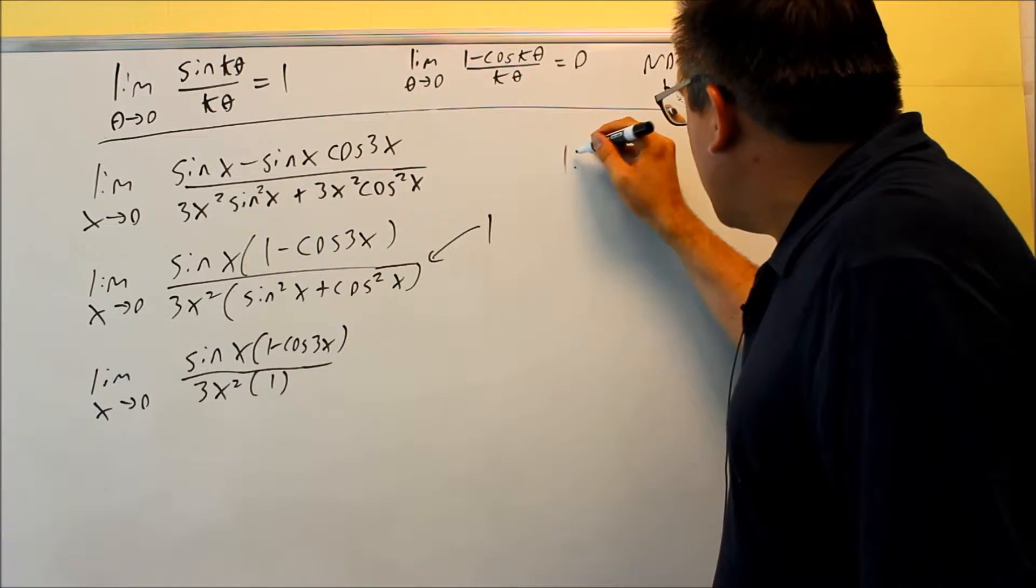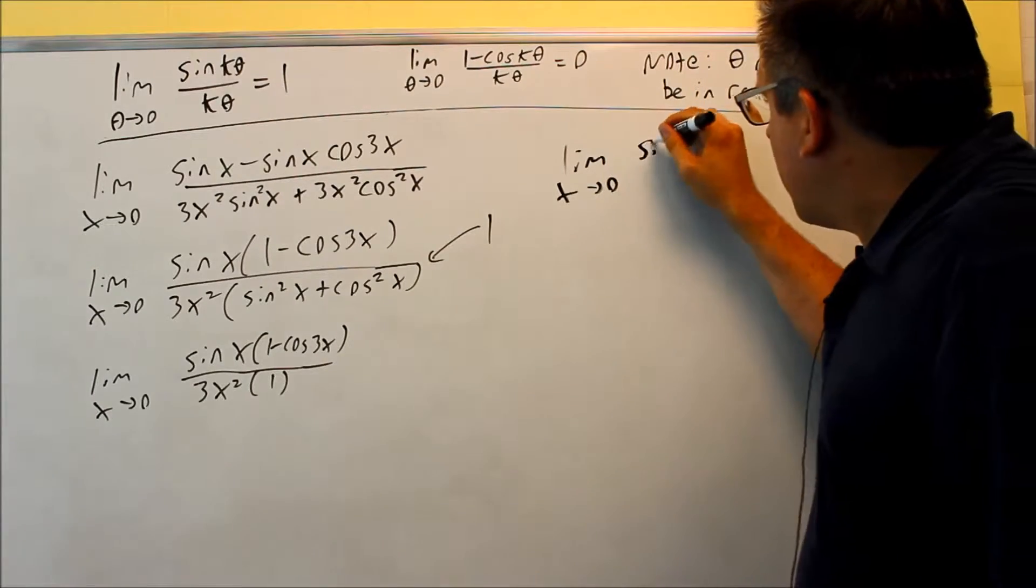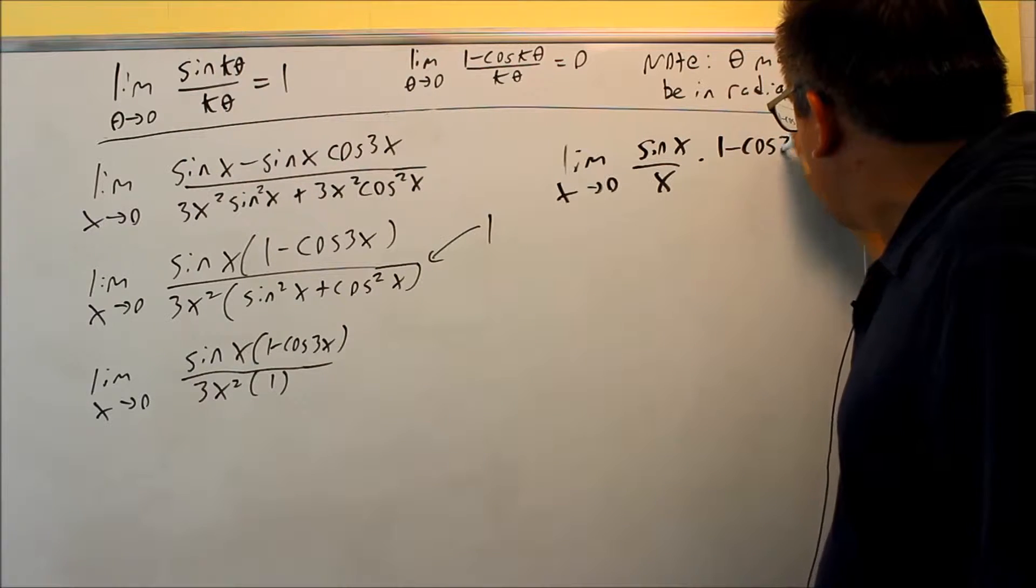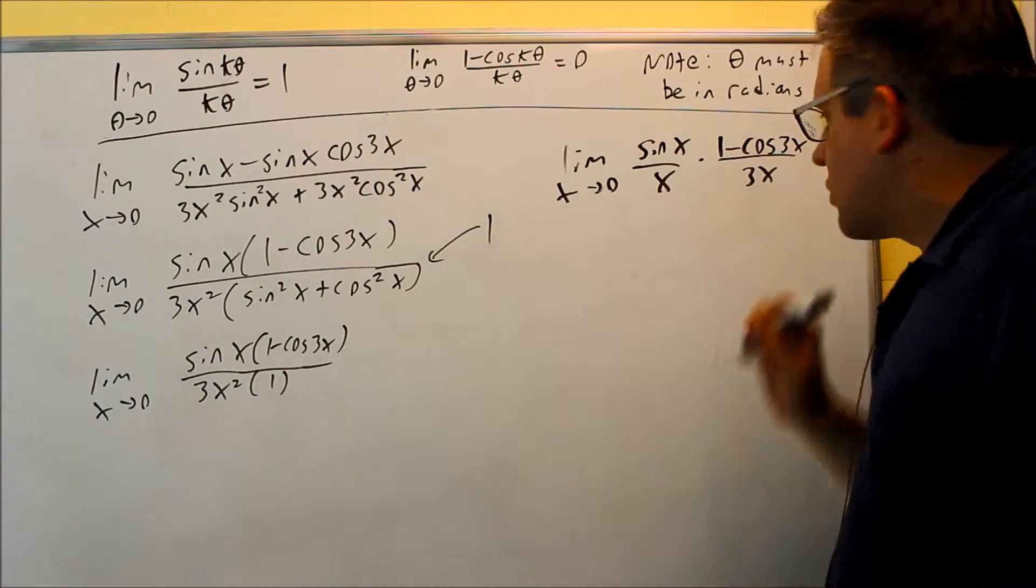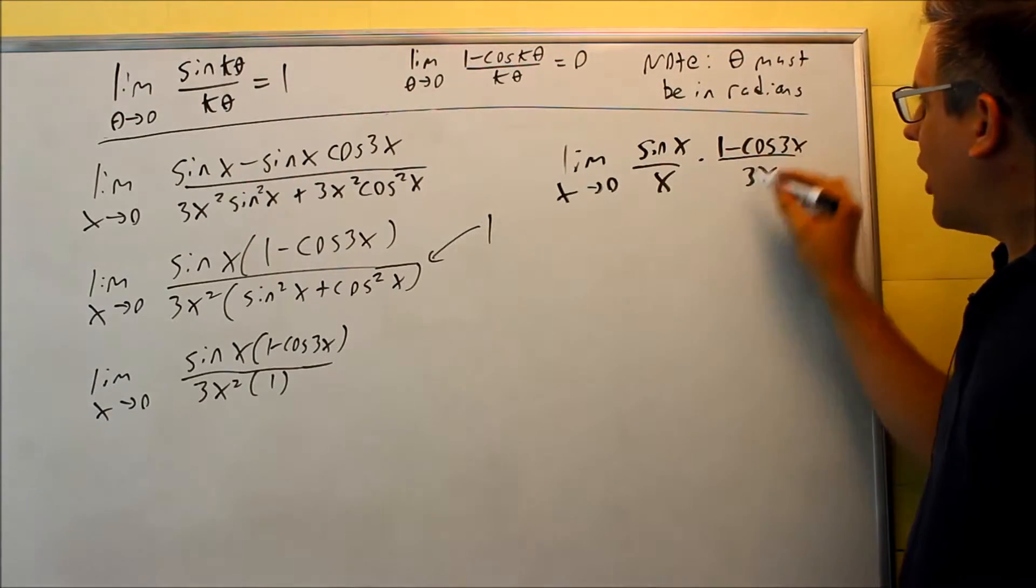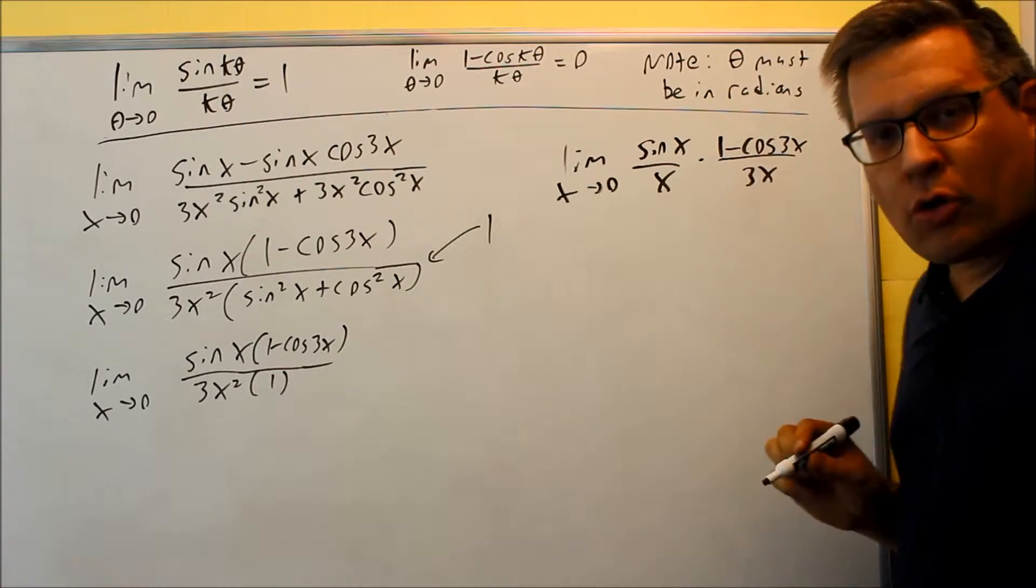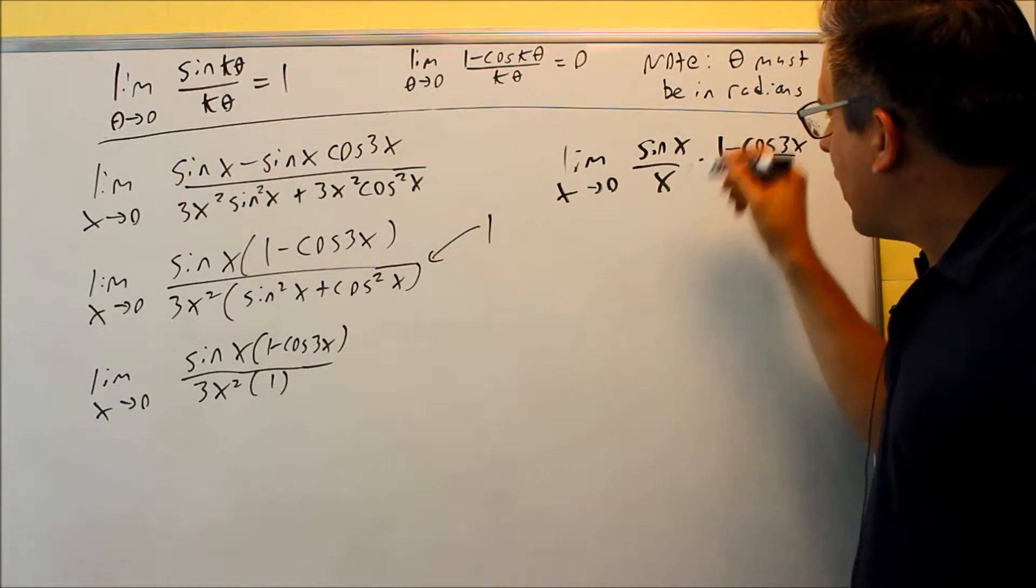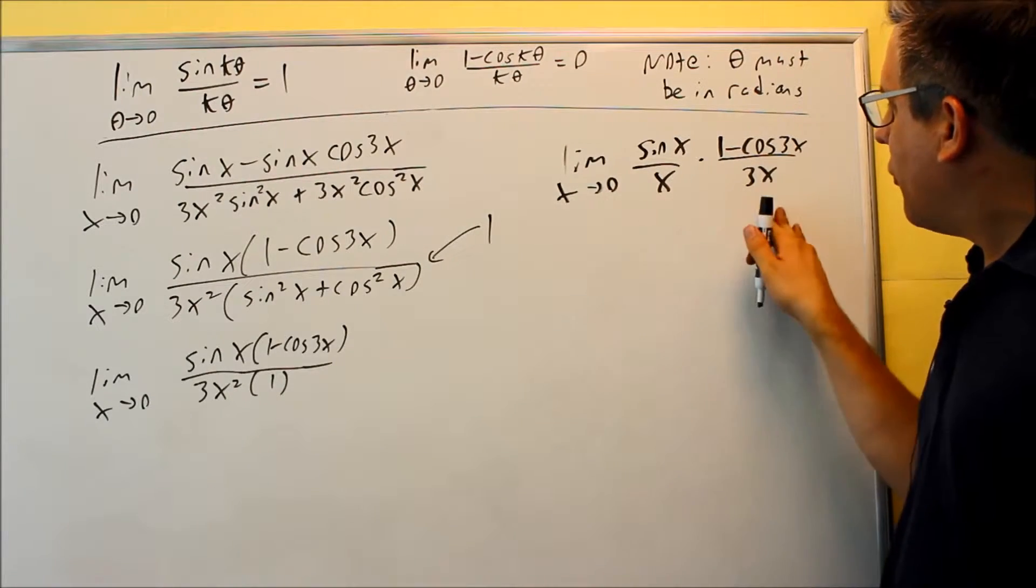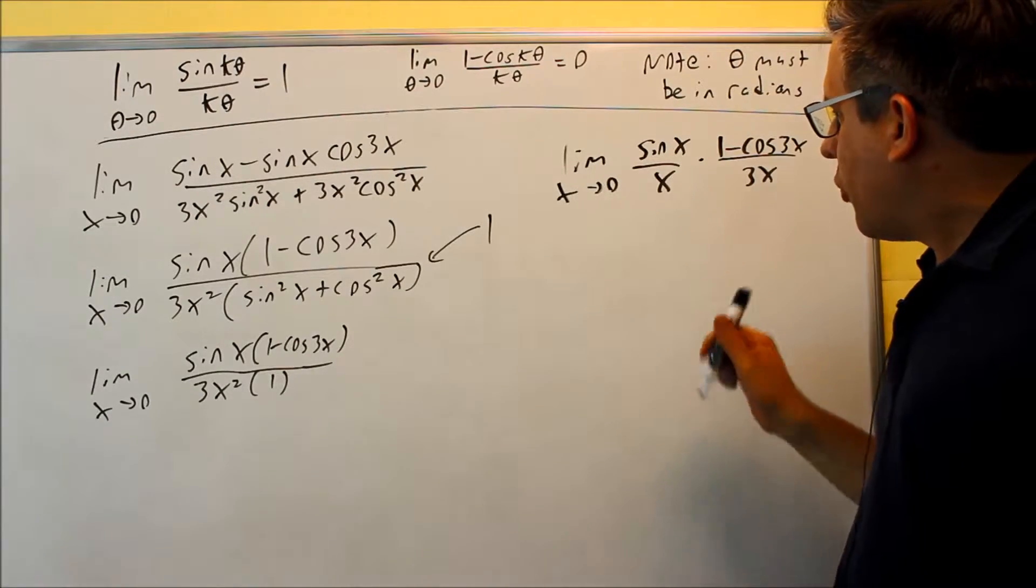So when I do that I have the limit as x goes to 0. I'm going to write it this way, sine x over x and then multiply by 1 minus cosine 3x over 3x. Why did I write 3x underneath here? Because I've got to make sure that this k value matches so I can apply that special limit. So I put 3x underneath this one because now both of these are going to match. So now I actually have both these limits appearing and so I can apply the limit for both of those separately.